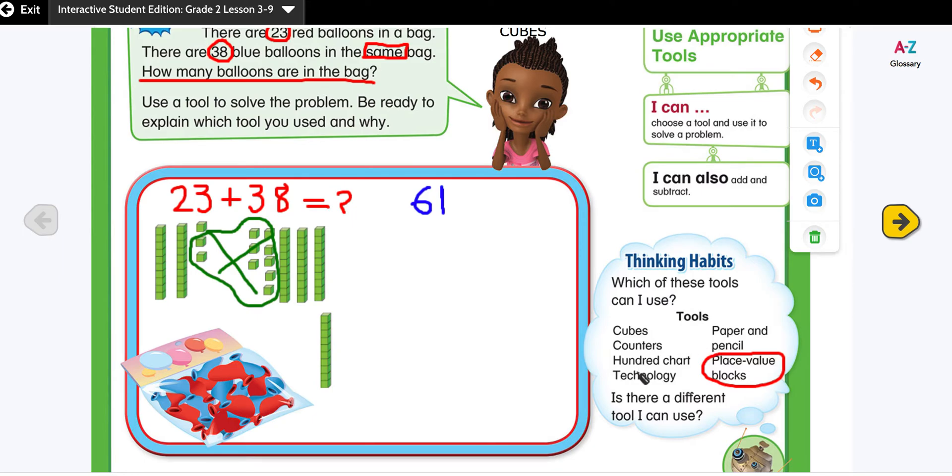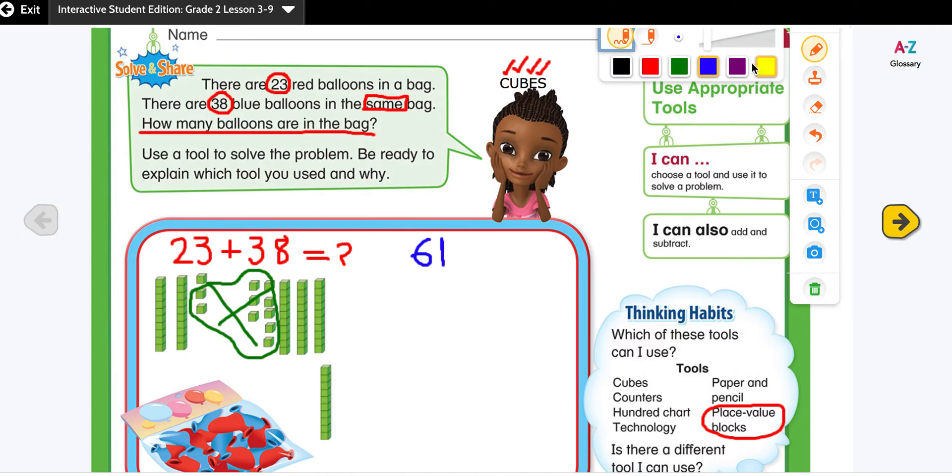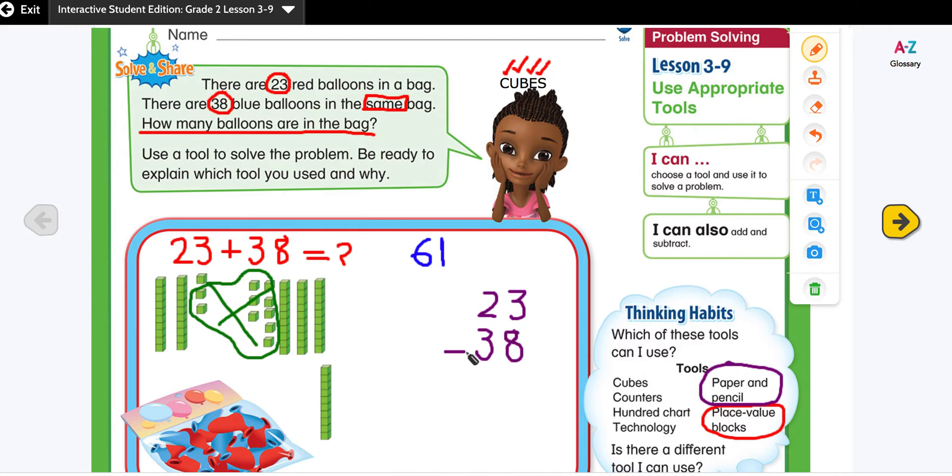We can also use the counters or the cubes or the hundred chart, or you can also use the paper and pencil. The next strategy I'm going to show you is using the paper and pencil. When we are having the paper and pencil, we can use our regular standard algorithm method where we are going to align the numbers with tens on one side and the ones on the other side. We have ones on this side and tens on this side.